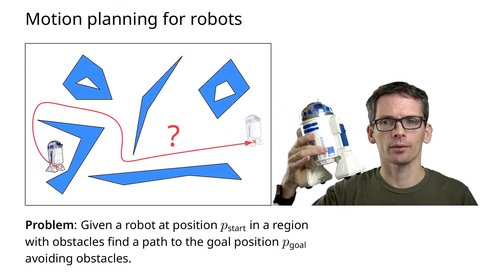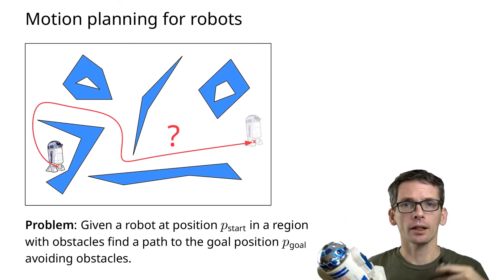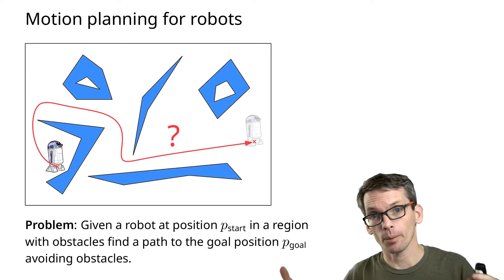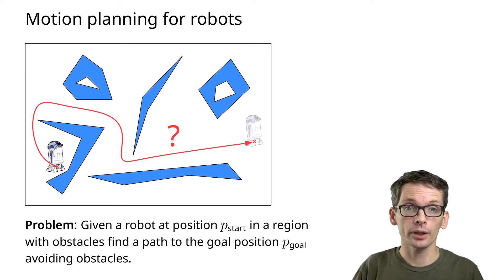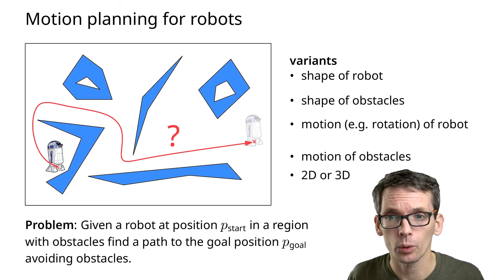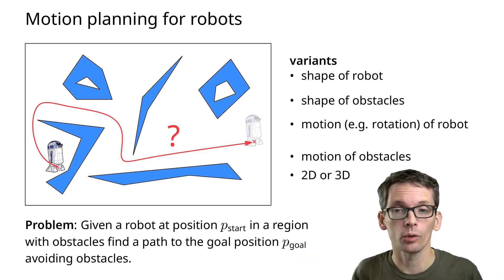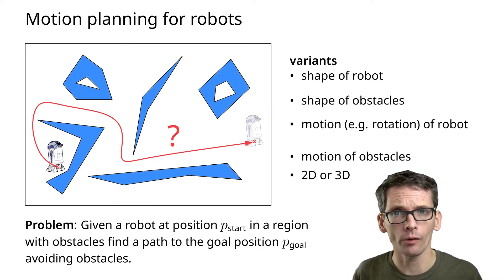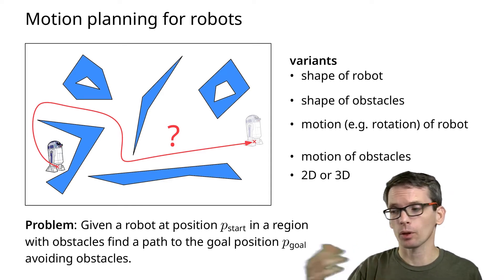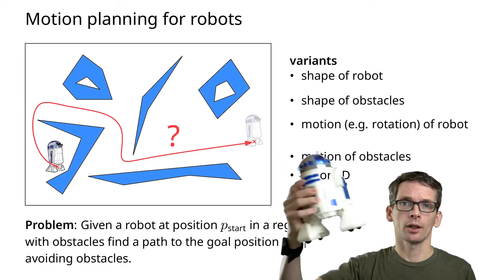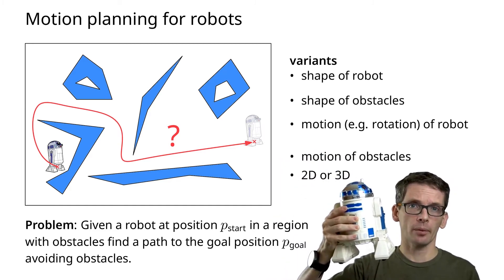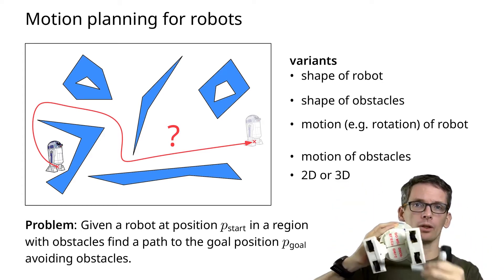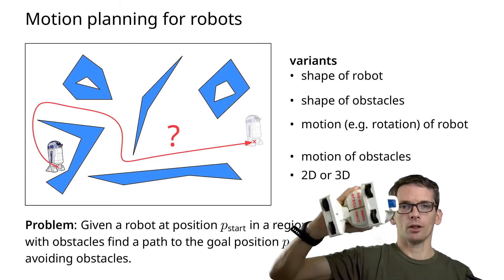For instance, a path like this. For this problem it's important to know what kind of shape the robot has, what kind of shapes the obstacles have, what kind of motion the robot can do, maybe the obstacles also move, and whether we're working in 2D or 3D. Very often we can think of 2D movement — for this robot, the third dimension doesn't really add much, so we can think of it moving in a two-dimensional plane.